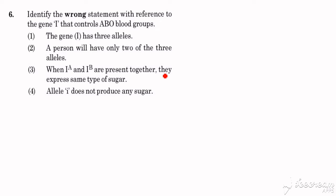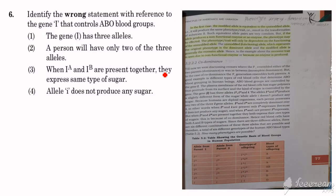Question number 6: Identify the wrong statement with reference to the gene I that controls ABO blood group. The options are: the gene I has 3 alleles and a person will have only 2 of the 3 alleles; when I-A and I-B are present together, they express the same type of sugar; or the allele I does not produce any sugar. This is from class 12, chapter on Principles of Inheritance and Variation.